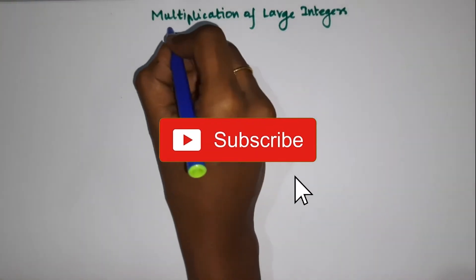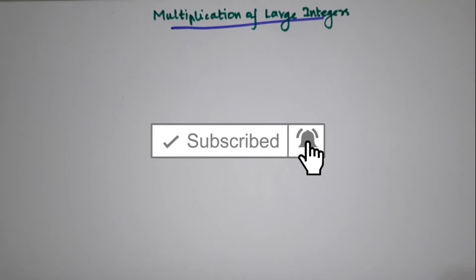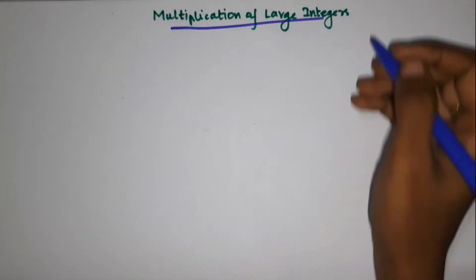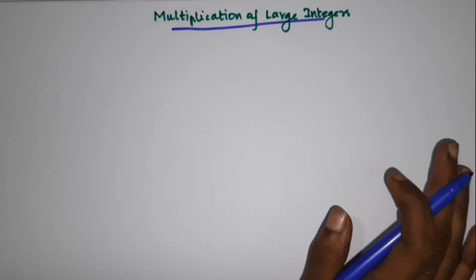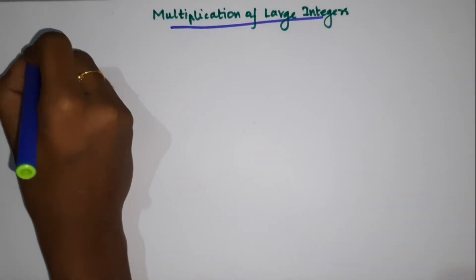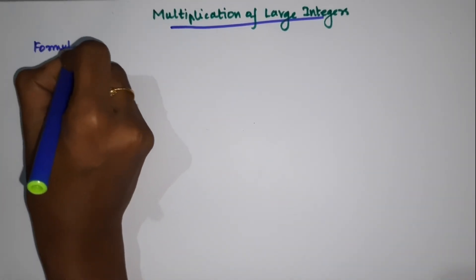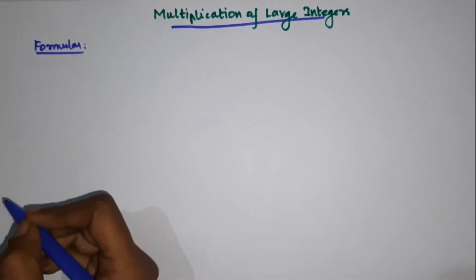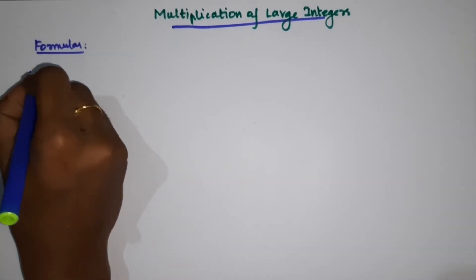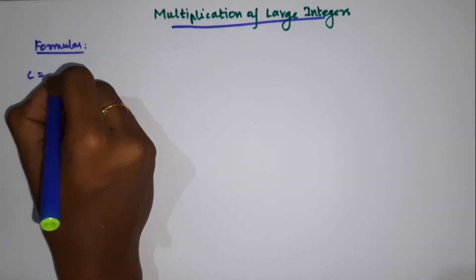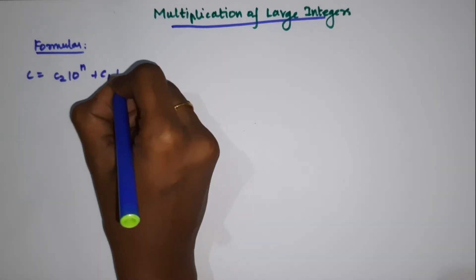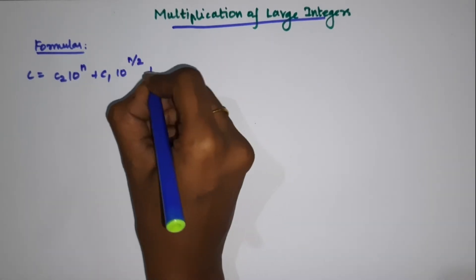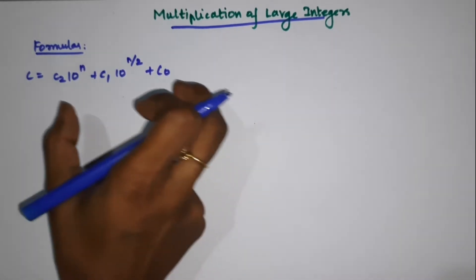Hello everybody. We are going to talk about multiplication of large integers. Multiplication of large integers is based on a formula. The formula is: c is equal to c2 times 10 power n, plus c1 times 10 power n by 2, plus c0. This is the formula.